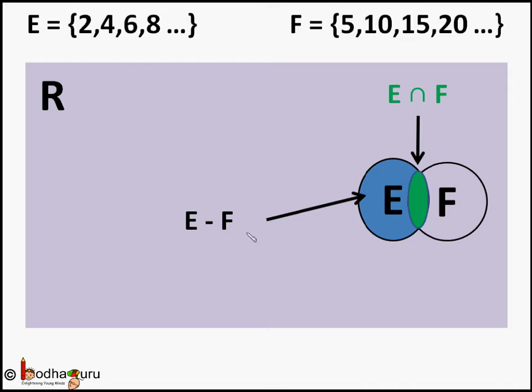Remember it is not the entire set E. It is the set E minus the area of set F which came inside E, that is removing the intersection part of E and F. So we say the difference of set E and F is a set of elements which belongs to E but not in F.